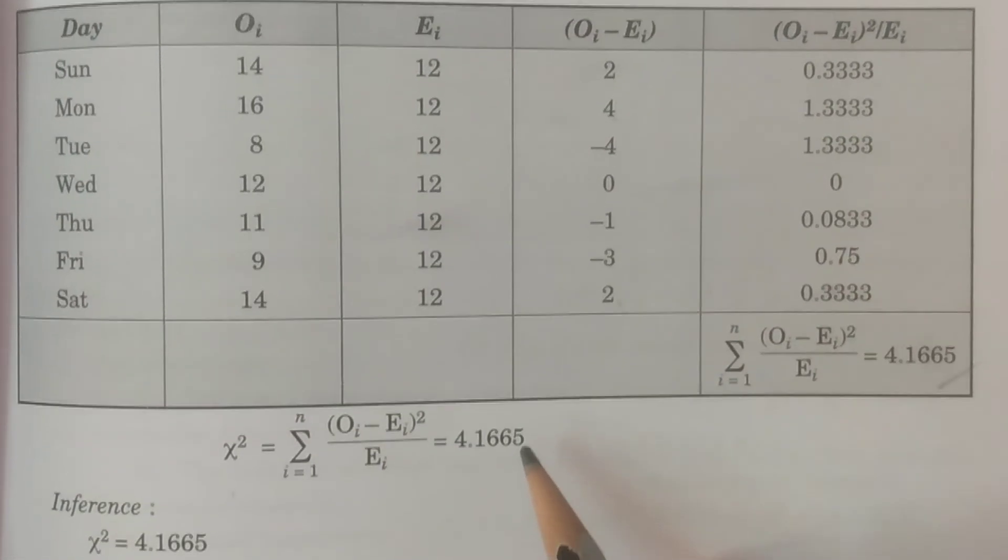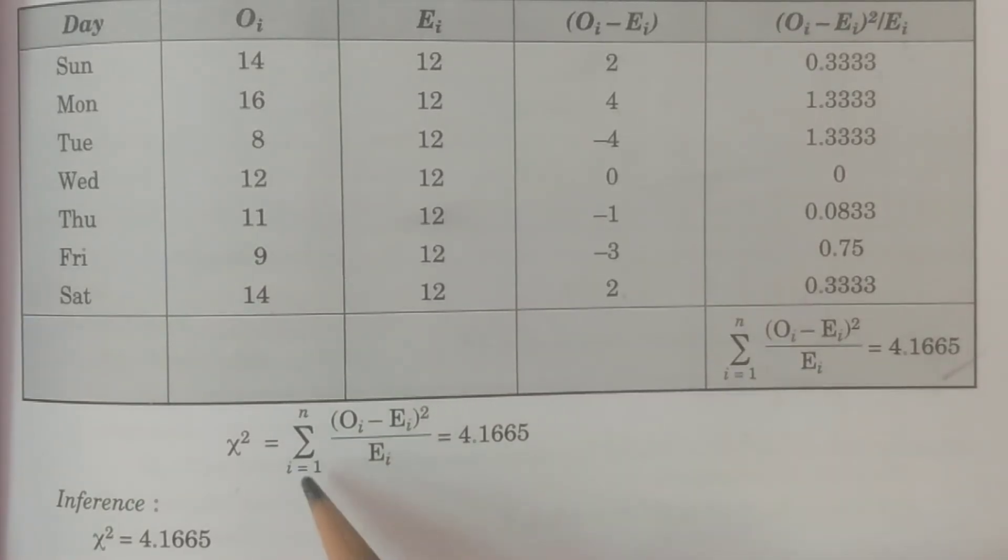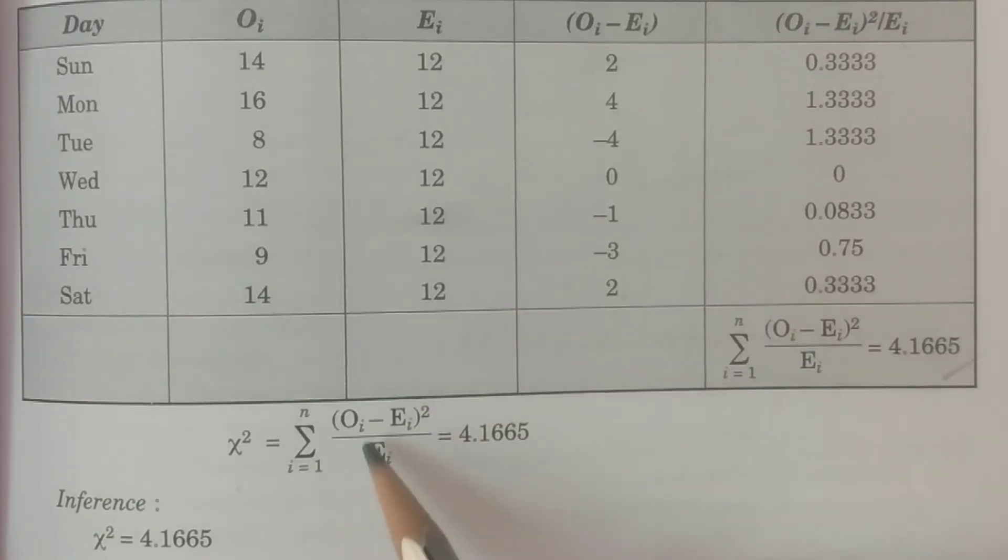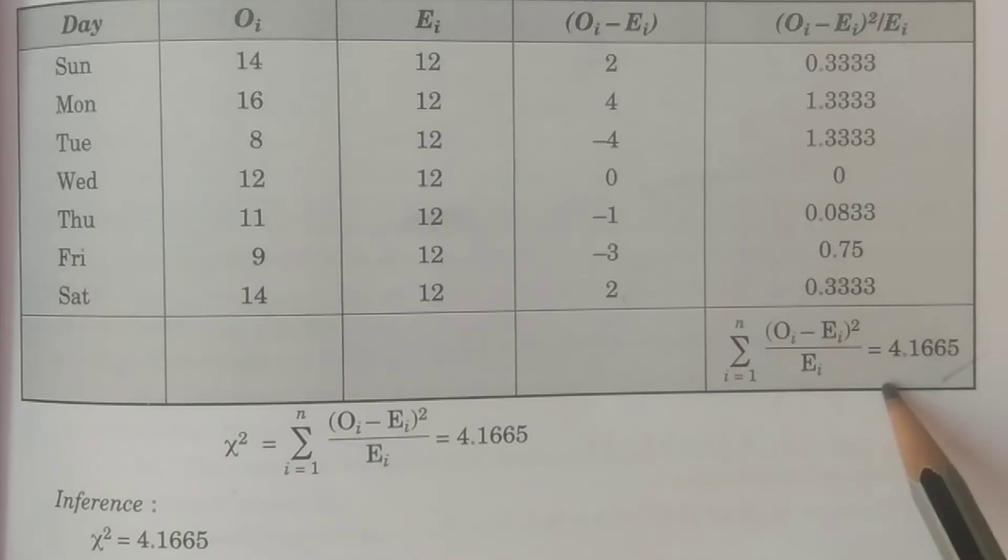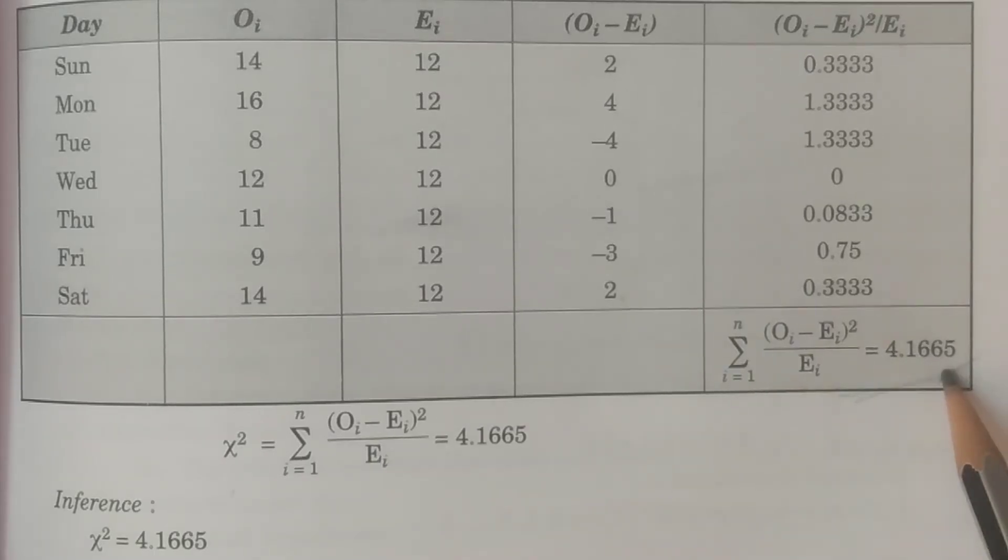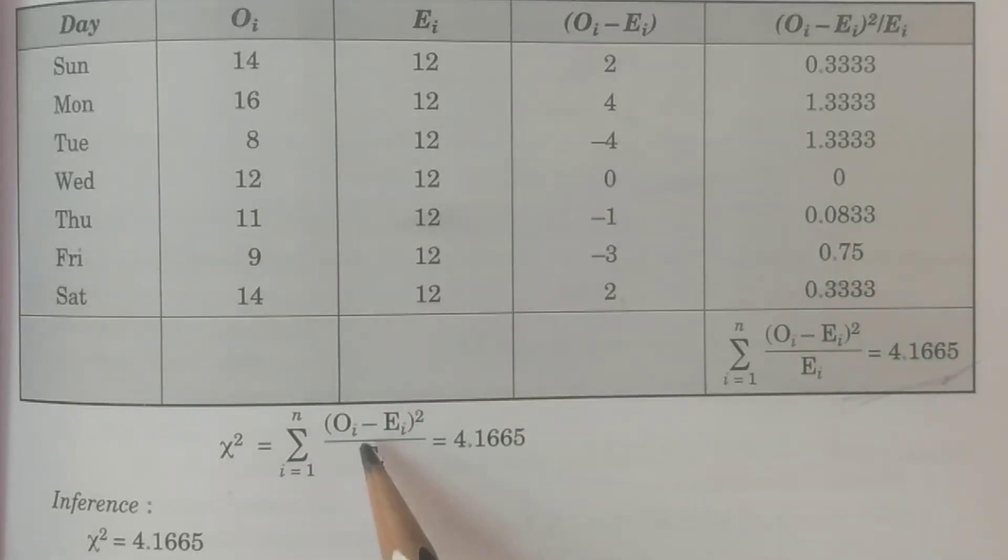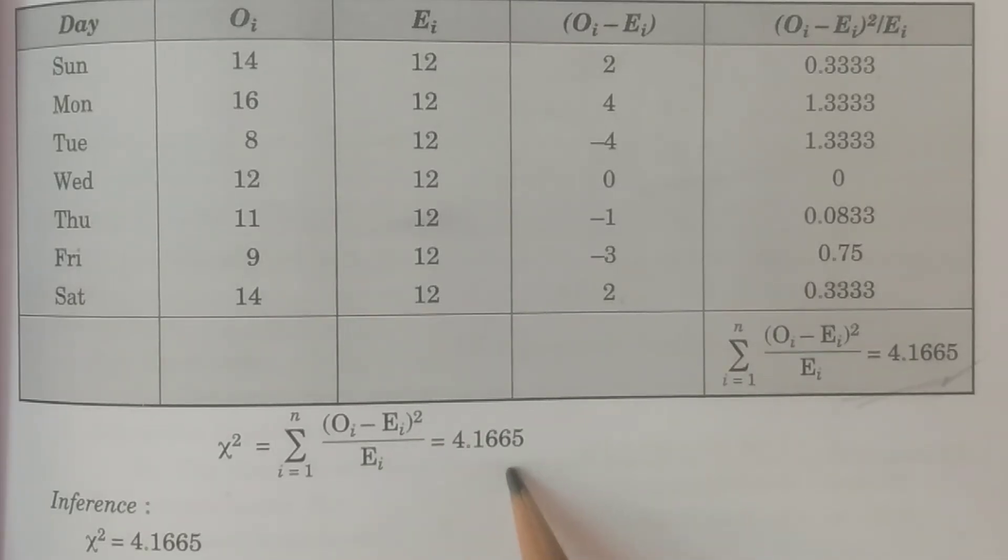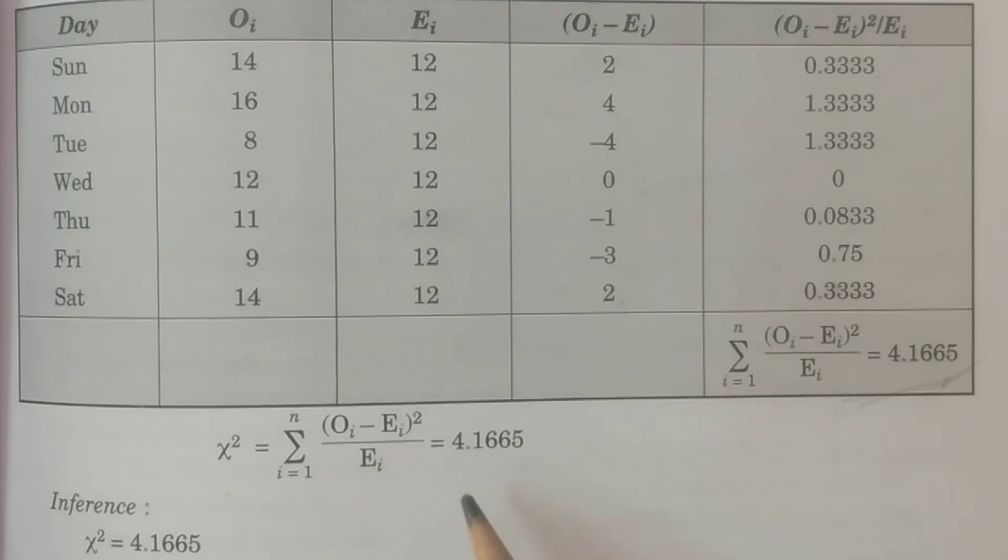You see here, refer here clearly chi-square is nothing but summation i is equal to 1 to n (Oi minus Ei) whole square by Ei. That is this value. Last column of the table. The total of the last column. That is summation i is equal to 1 to n (Oi minus Ei) whole square by Ei, 4.16. Chi-square is always positive. You need not to consider modulus.